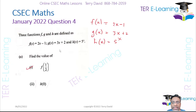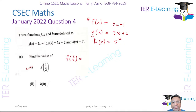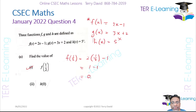The first part asks us to work out f(1/2). Essentially, we substitute 1/2 into the function: 2 multiplied by 1/2 minus 1. That gives us 1 minus 1, which equals 0. So f(1/2) = 0.